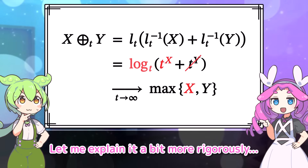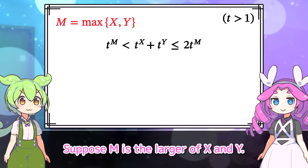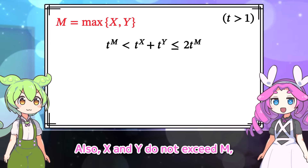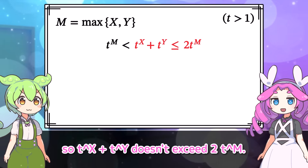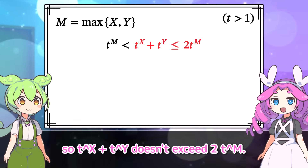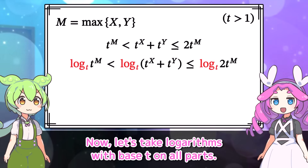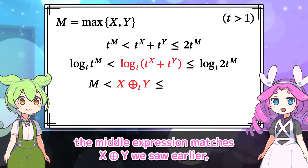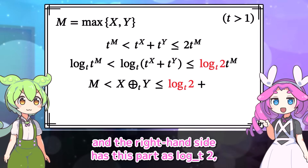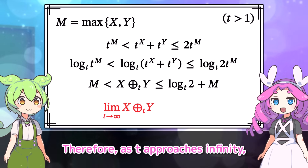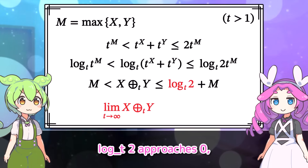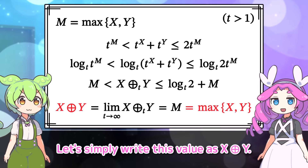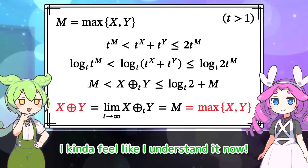Let me explain it more rigorously. Suppose m is the larger of x and y. Since m is either x or y, t to the x plus t to the y is greater than t to the m. Also, x and y do not exceed m, so t to the x plus t to the y doesn't exceed 2t to the m. Now let's take logarithms with base t on all parts. The left-hand side becomes m. The middle expression matches x ⊕ y we saw earlier. The right-hand side has log base t of 2 plus m. As t approaches infinity, log base t of 2 approaches 0. So by the squeeze theorem, the limit is m — that is, the maximum of x and y. Let's simply write this value as x ⊕ y.